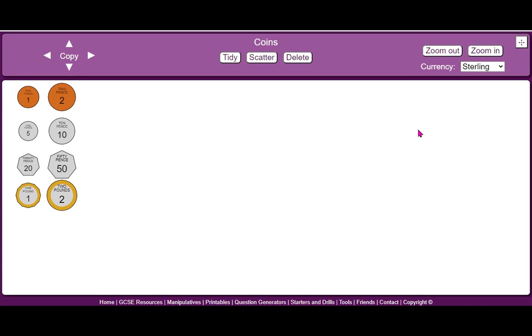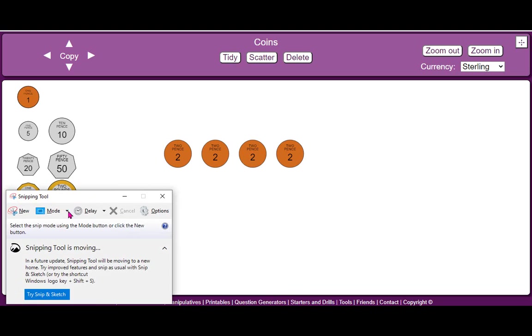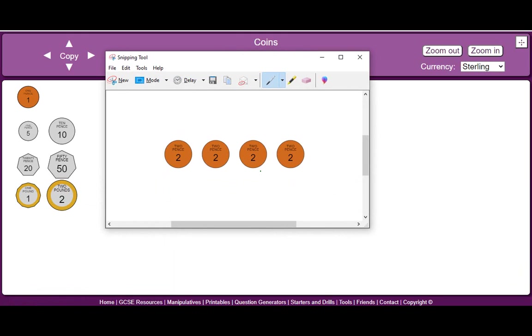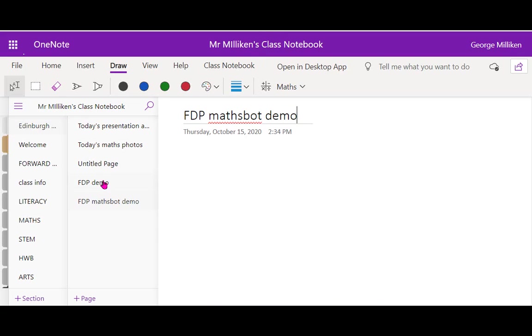One of the ones that's really handy for that is using these MathsBot manipulatives that I've got here so I could simply drag out the four coins and what I'm going to use here, I'm using a Windows device so I'm just going to use the snipping tool. I can copy those coins and I've already got a OneNote open and I can paste those coins into my OneNote.